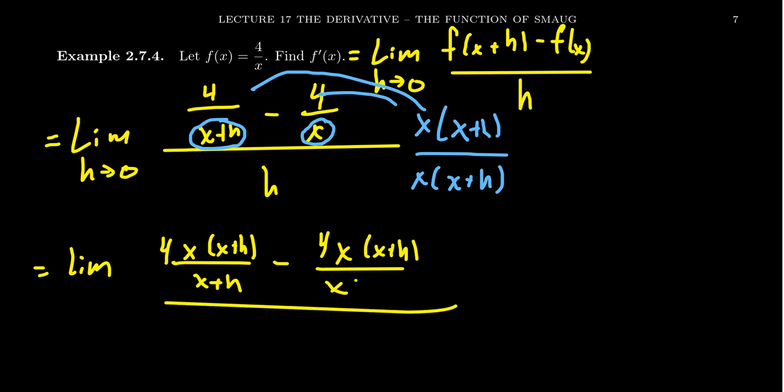And then the main denominator, you're going to get h times x times x plus h. When it comes to fractions, do not multiply out the denominator. Keep it factored. There's not going to be any benefit of distributing the h and the x in this context. So leave it factored.